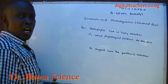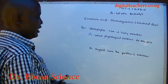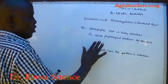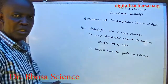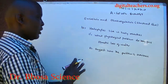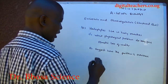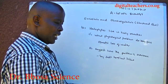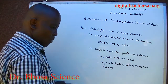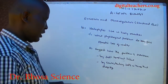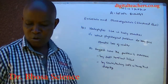Halophytes live in salty marshes. What physical problems do they face? They face the osmotic loss of water. Suggest how the problem is overcome: by solute tolerant tissues, and by concentrating solutes in leaves that drop off.